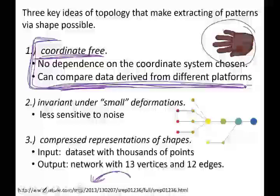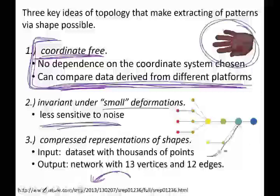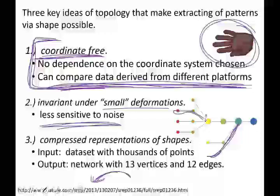Mapper is also invariant to small deformations, which makes it less sensitive to noise. Remember the hand data set — if I move a thumb a little bit, we'll get basically the same shape; we can twiddle our fingers a bit and it won't matter. If I clench into a fist, I will get something different — so major changes produce different results — but moving fingers a little bit won't cause a major change; I'll get the same graph.